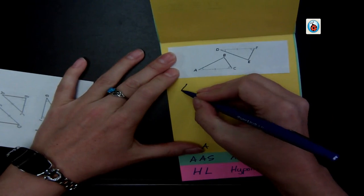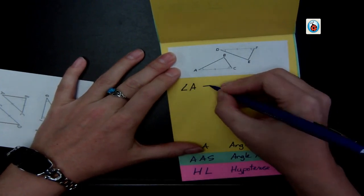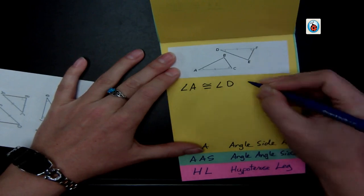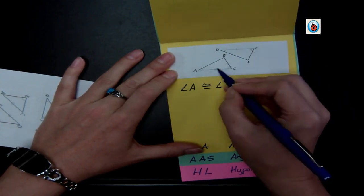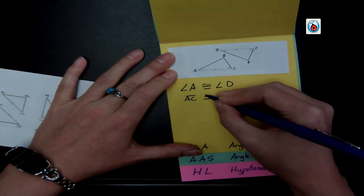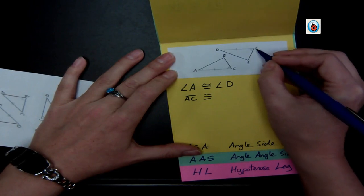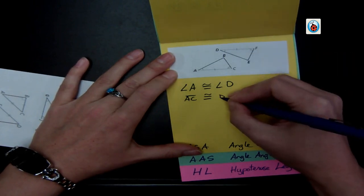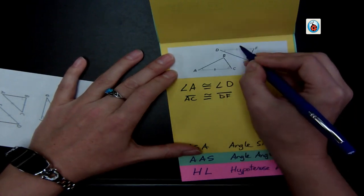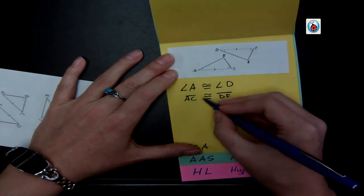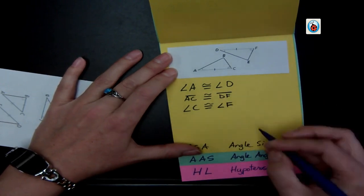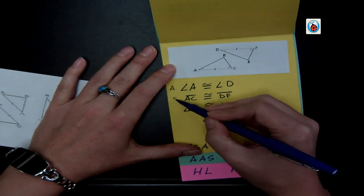So here, angle A is marked for me, and it's congruent to angle D, which has that same one mark on it for me. Then I have, in between the two marked angles, is this side AC, is the same as DF, and that's marked by this one line. And then angle C is congruent to angle F. So I have an angle, a side, and an angle.